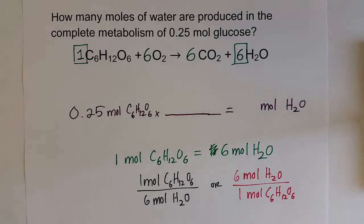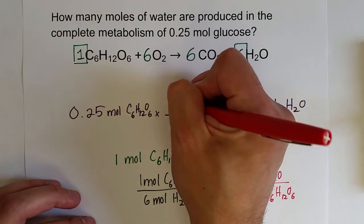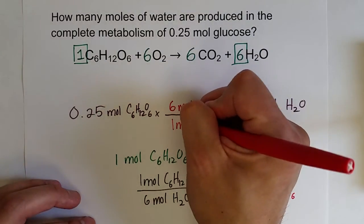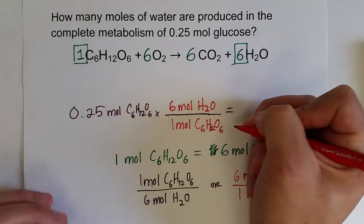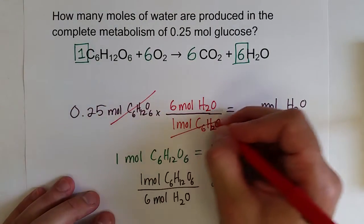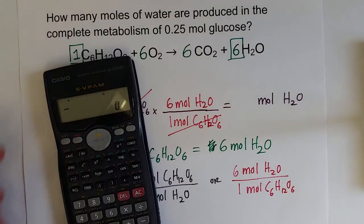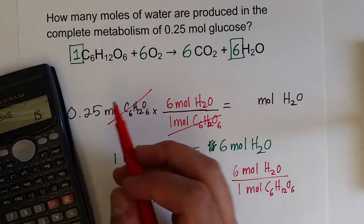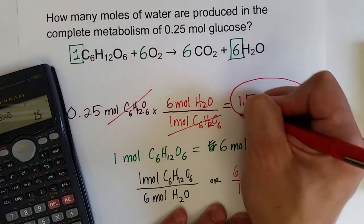I need moles of glucose to cancel out and moles of water to remain, so I'll use the conversion factor of 6 moles of water produced per 1 mole of glucose. Moles of glucose cancel out, and so 0.25 times 6 gives 1.5 moles of water. With two significant figures, 1.5 moles of water are produced.